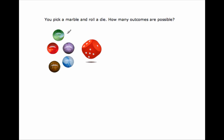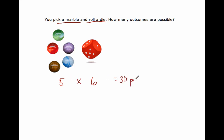Now you do the next problem on your own and come back when you have the answer. You pick a marble and you roll a die — two different events. How many outcomes are possible? Using the Fundamental Counting Principle, I count one, two, three, four, five for my first event of picking a marble, and rolling a die gives six outcomes. Five times six is 30, so I have 30 possible outcomes.